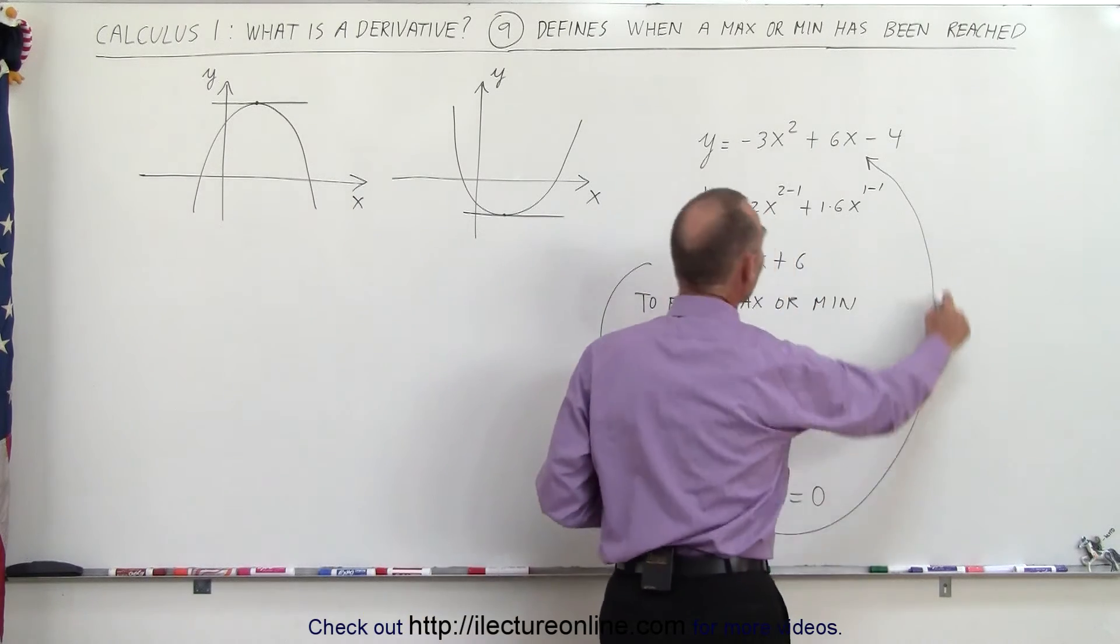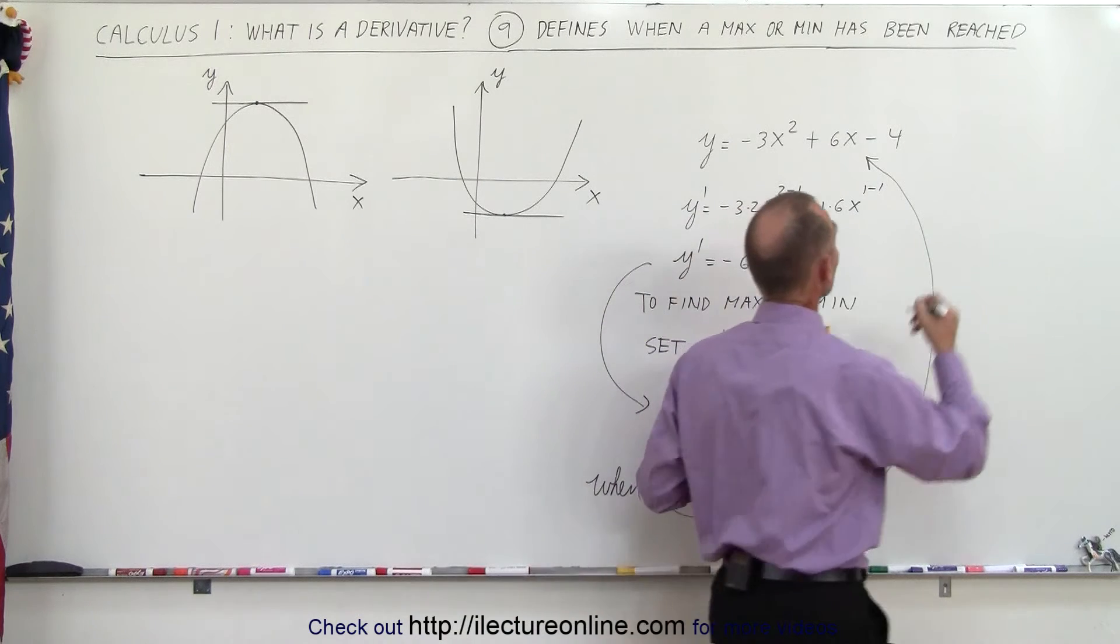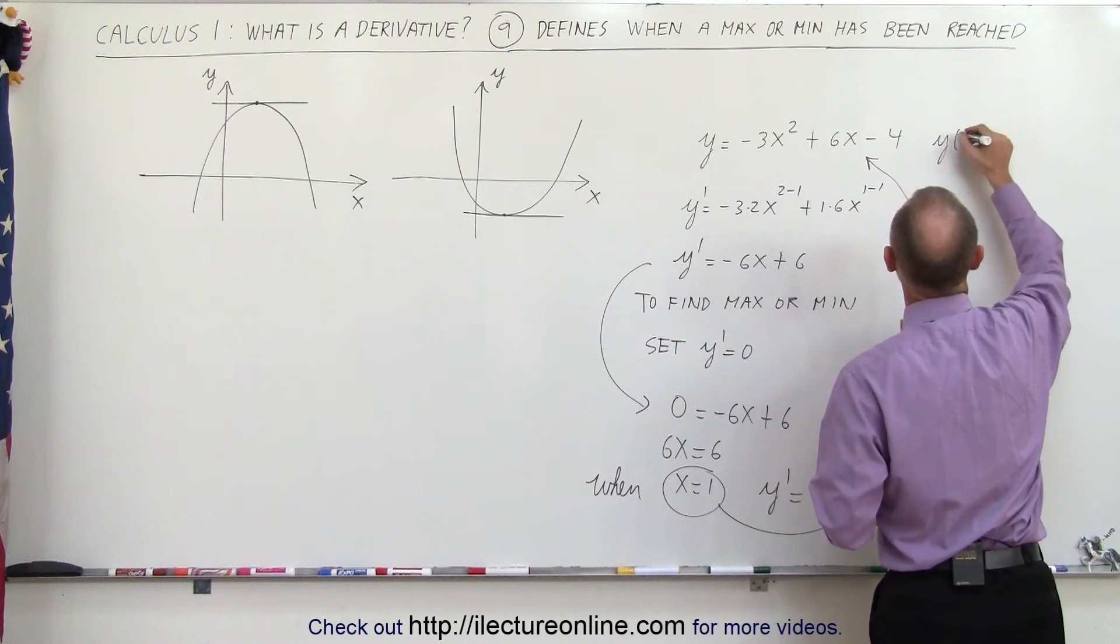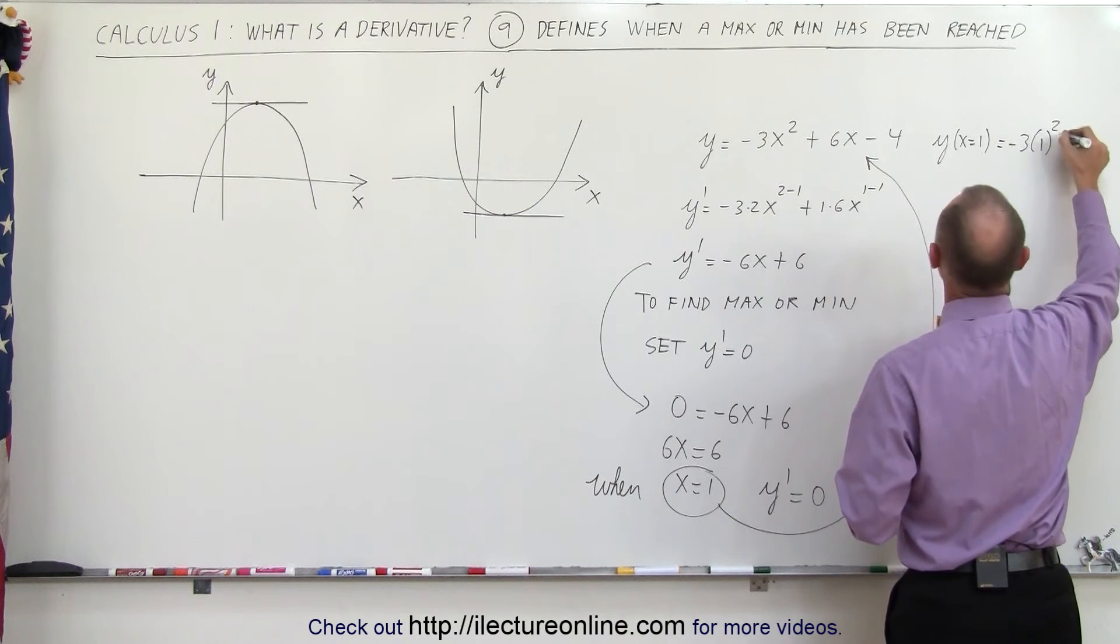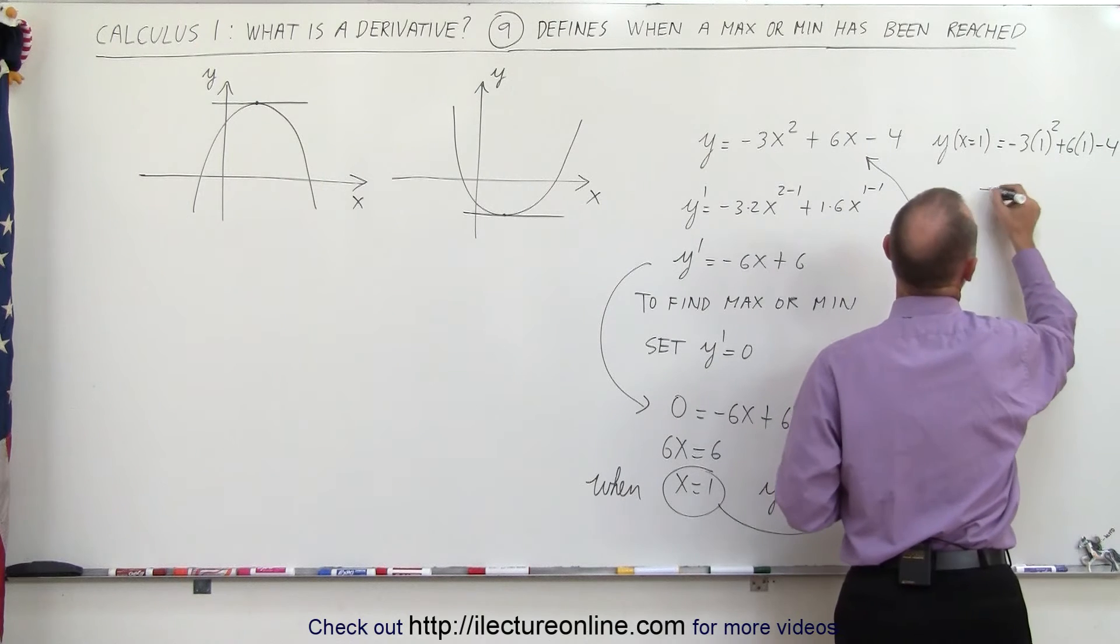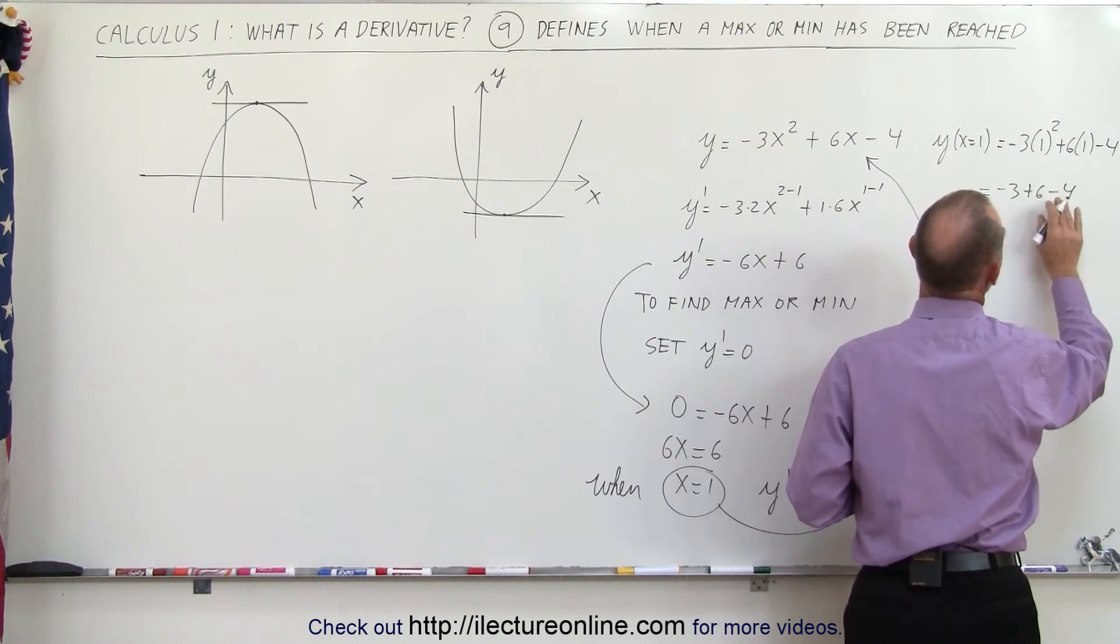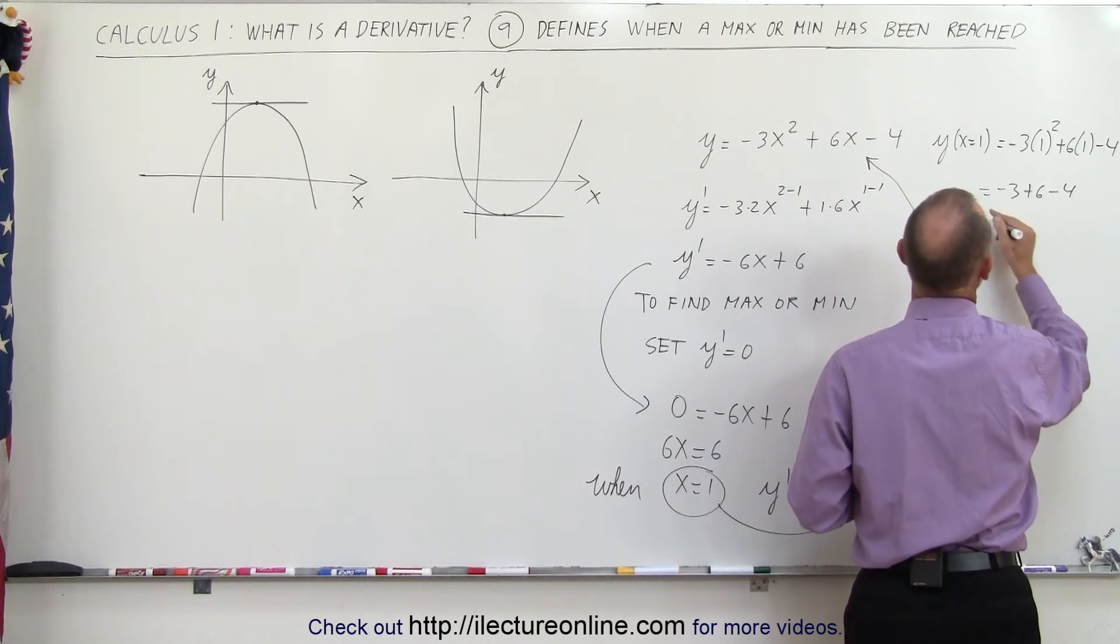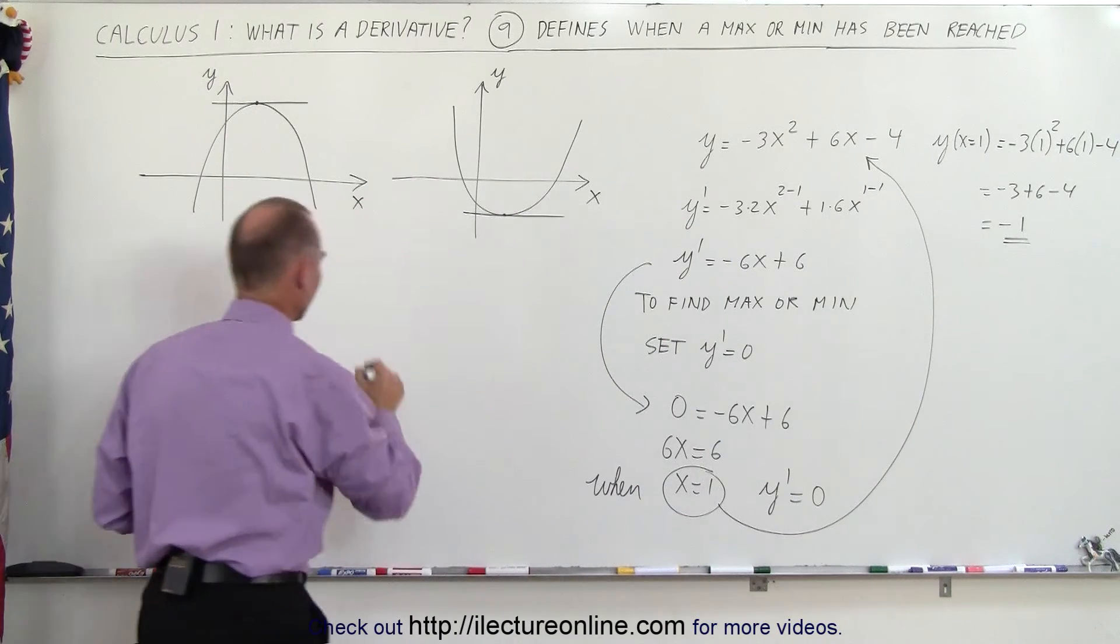Then plugging this value back in the original function, we're going to find out what the corresponding y value is. So y when x equals 1 is equal to minus 3 times 1 squared plus 6 times 1 minus 4. So this is equal to minus 3 plus 6 minus 4, minus 3 minus 4 is minus 7 plus 6, that's equal to minus 1. So when x equals a positive 1, y is a negative 1.